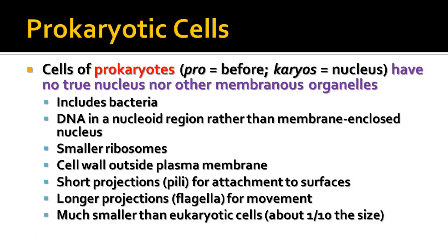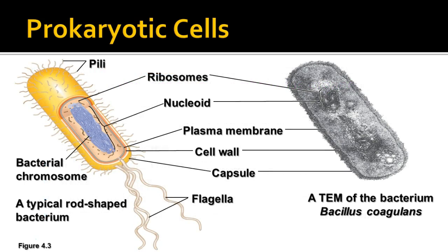Prokaryotic cells are generally much smaller than eukaryotic cells — about one-tenth to one-hundredth the size of eukaryotic cells. Here we have a micrograph of a bacterium, and here is a generalized diagram showing the location of these different structures in the prokaryotic cell.